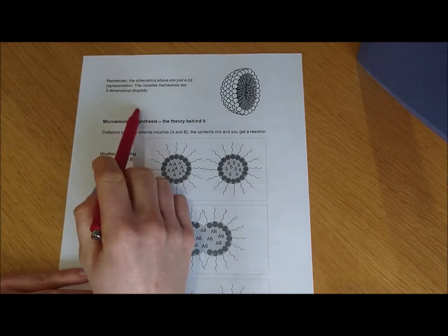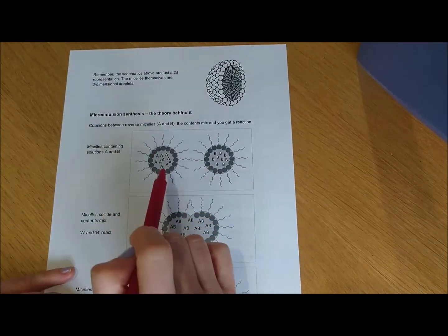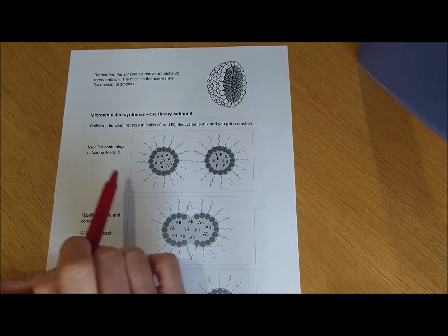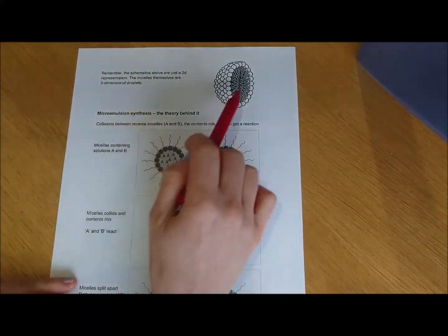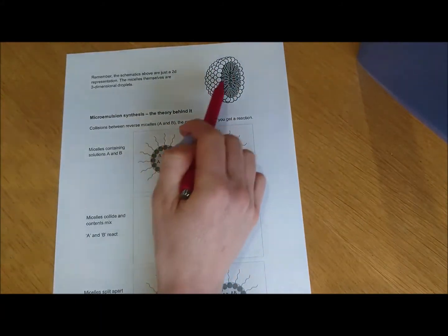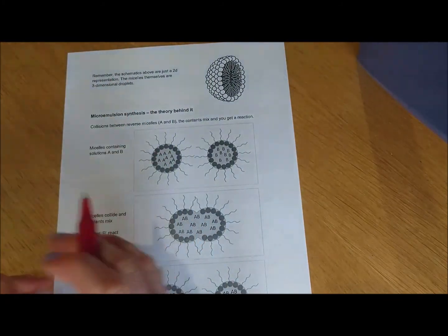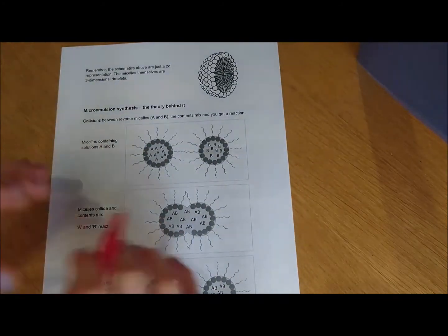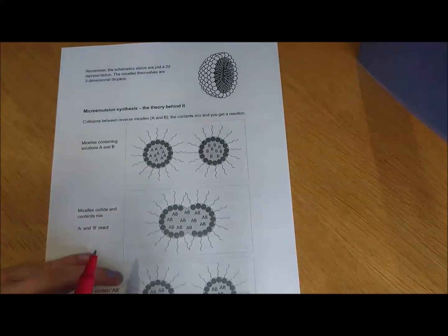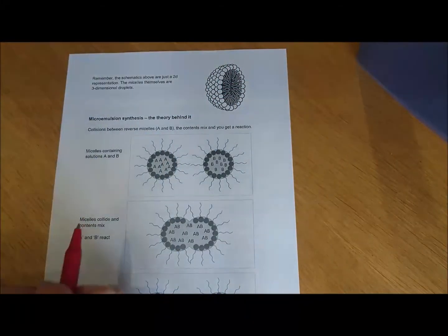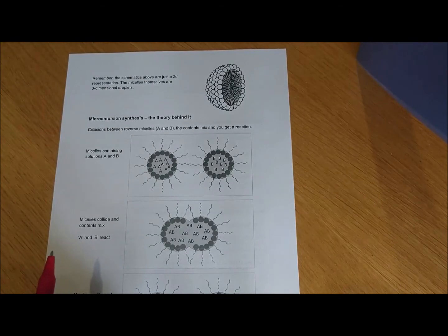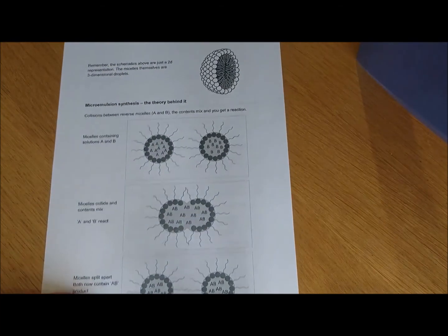Just a final key point to mention in this video, remember that these schematics that we're drawing of the different micelles, they are just 2D representations. The micelles themselves are three-dimensional droplets where you've got your surfactants crowded around that spherical, well, in our case, we're going to talk about spherical droplets. You can get different sizes, but they are 3D structures, and we're just going to look at 2D representations of those.